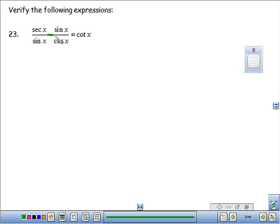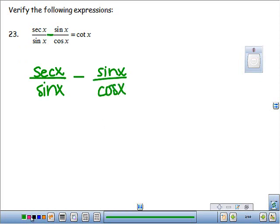You have two fractions being subtracted. To subtract fractions, you have to have a common denominator. So I'm going to rewrite this, just so we have a little room to work with. We have secant x over sine x minus sine x over cosine x. To get a common denominator, I'm going to multiply this by cosine, and this by sine.